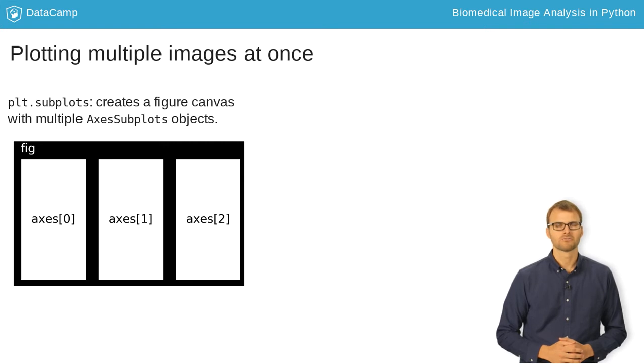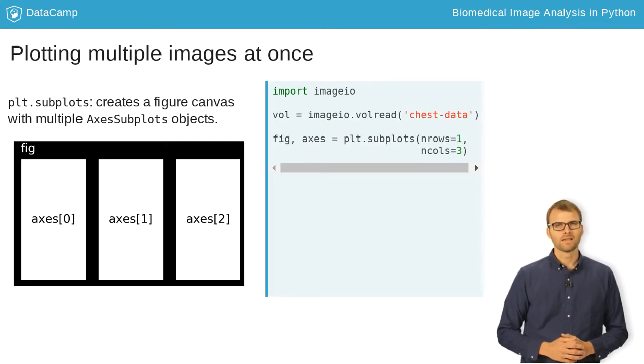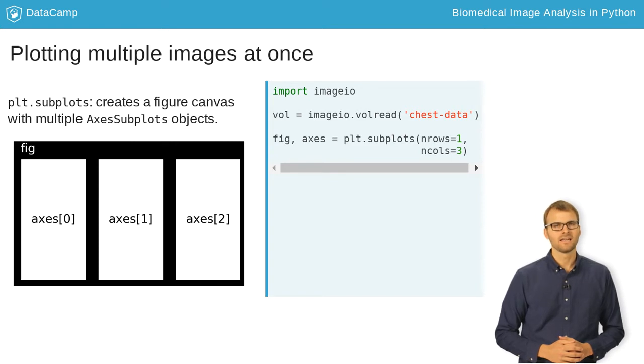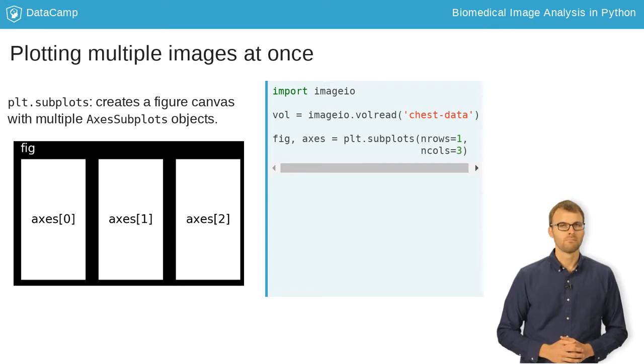which creates a grid of axis objects based on the number of rows and columns you specify. When you call PyPlot.subplots, it returns a figure object and an array of axis handles. In this case, the axes array has a shape of 1 by 3.